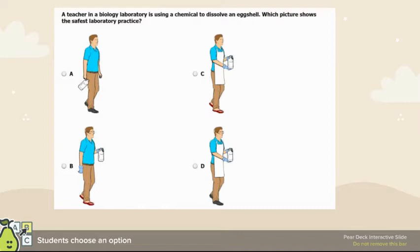We haven't gone over a ton of laboratory safety practices since we weren't in person doing labs, but basically anytime you see a laboratory safety question, think about common sense. Choice A shows someone using one hand with no goggles, no lab coat or apron, no gloves — that's an automatic no. B has goggles but no apron, gloves but only one hand carrying the tub, so that's also no.